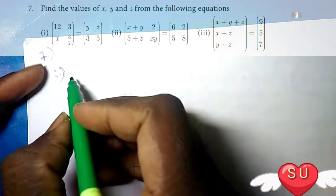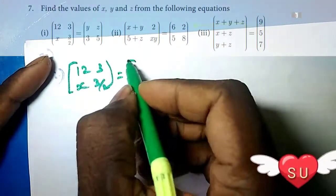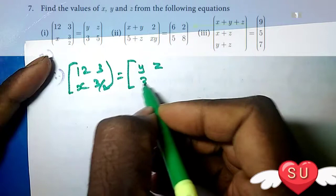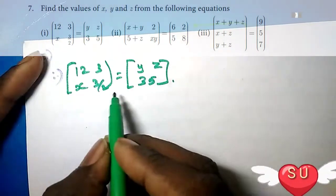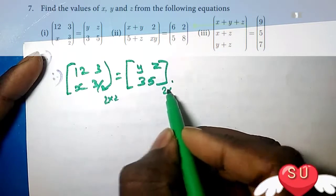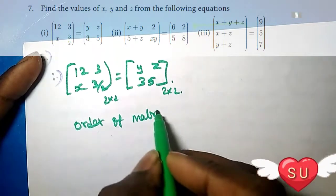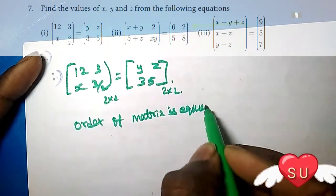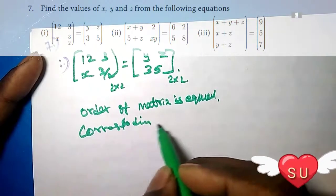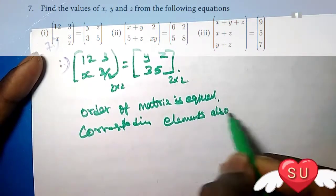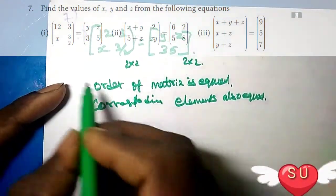The first sum is: matrix with elements 1, 2, 3 and x, 3 by 2 equal to y, z, 3, 5. The order of matrix is equal — this is 2 into 2, this is 2 into 2, this is 2 into 2. Since the order of matrices are equal, the corresponding elements are also equal. So here the element is 12.